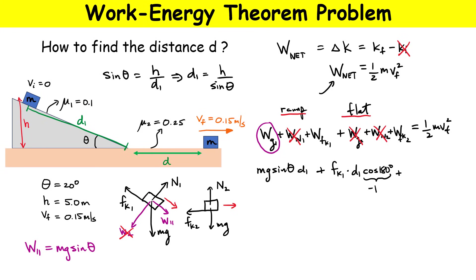For the work done by friction during the flat section: it looks similar, but with a different friction force F_k2 and the unknown distance d. It's multiplied by cos(180°) = −1, giving a negative term. All of this must equal the final kinetic energy, one-half mv_final squared.